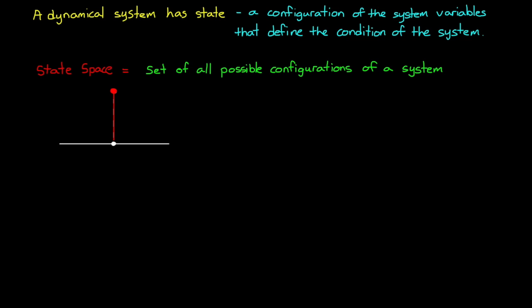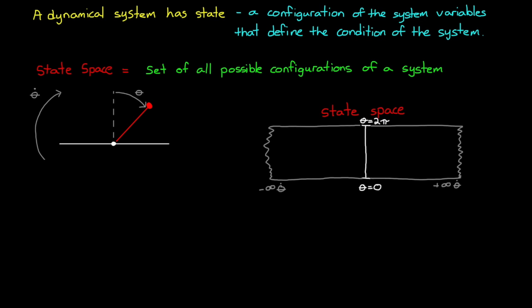For example, take a pendulum that has two states, angle theta and angular rate theta dot. The state space would stretch from 0 to 2 pi for theta to cover the entire circle, and negative to positive infinity for theta dot to cover all possible rates at which it could spin. Now, of course, realistically, your pendulum might never exceed something like 10 radians per second, so we can chop it down to this much smaller operating state space, or the operating envelope.